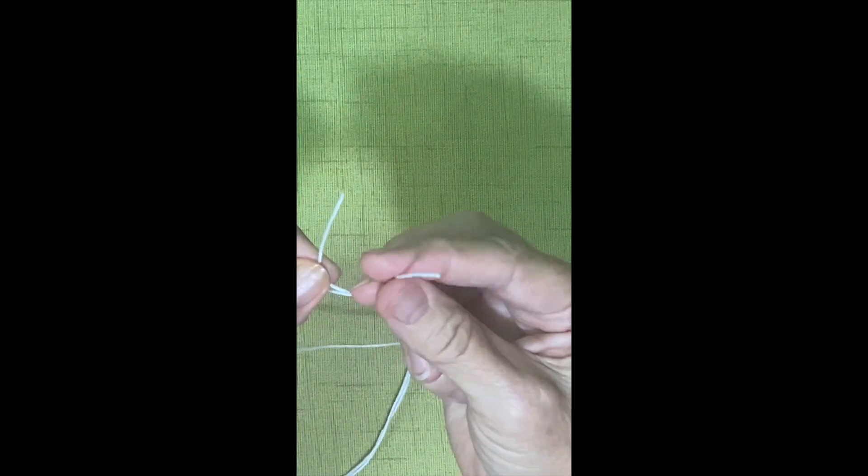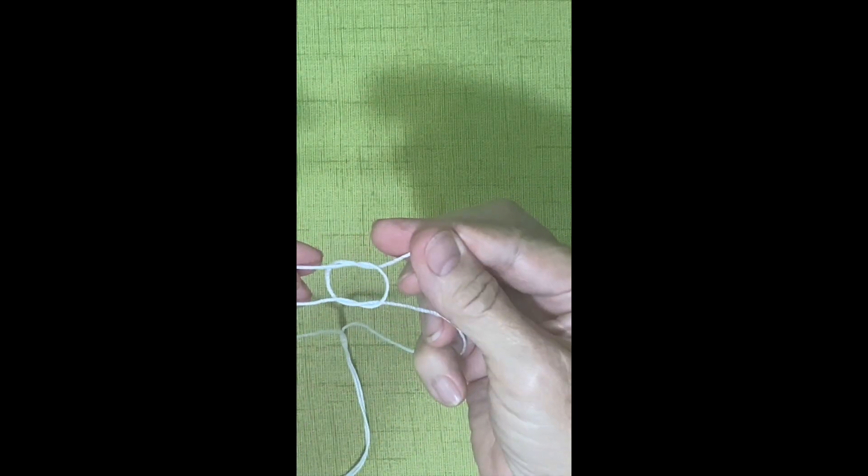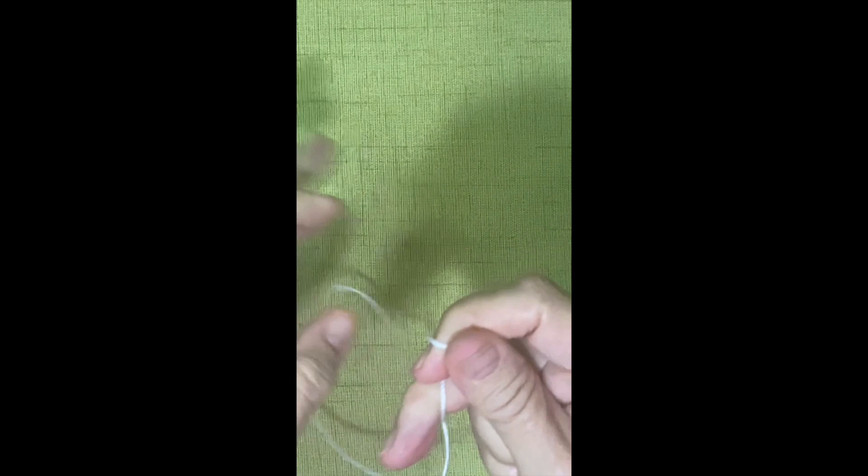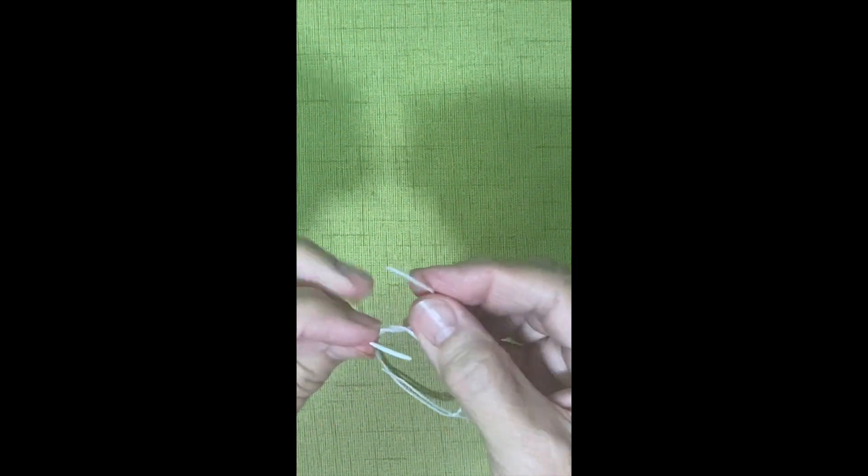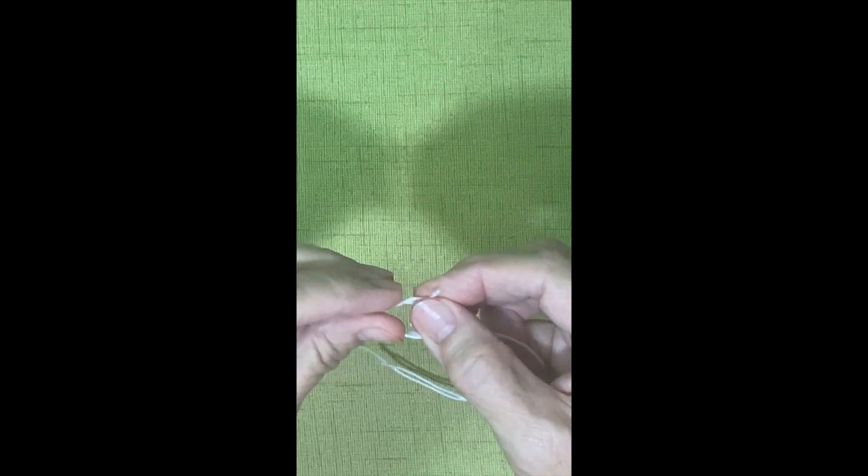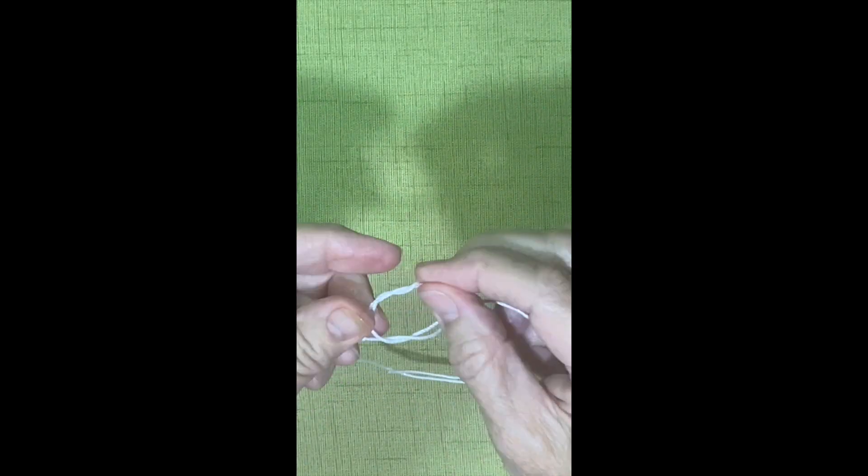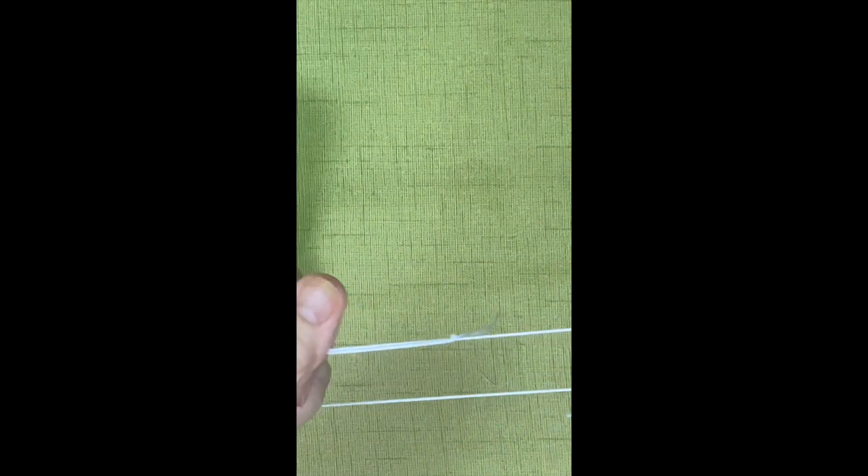And we'll review our knots. Left over right and right over left, it's a square knot. Right over left, left over right, and then over right again is a surgeon's knot.